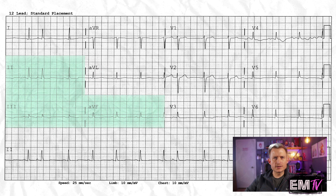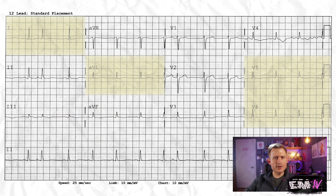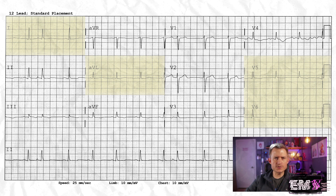This lead grouping correlates with vessels that are more on the right side of the heart. The last lead grouping I look at are the laterals — at this point, they should make up the leftover leads: your high lateral leads, 1 and AVL, and your lateral wall leads, V5 and V6. The lateral wall leads tend to correspond with vessels on the left side of the heart, and the high lateral leads tend to correspond with vessels on the right side. However, in some significant infarcts, the lateral wall and high lateral leads can both be involved.